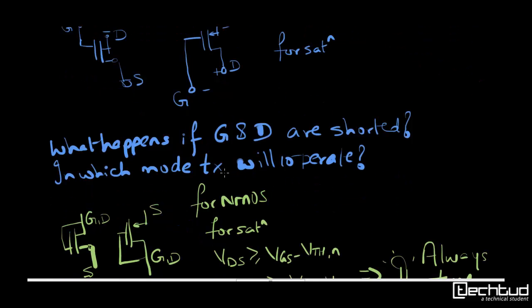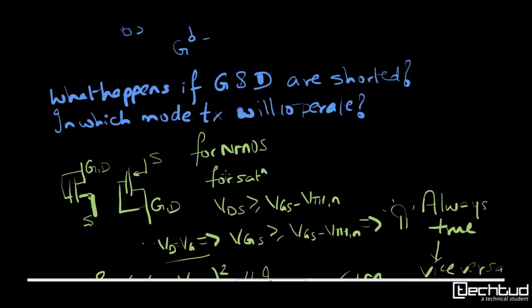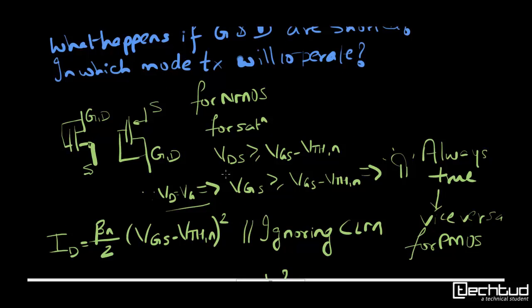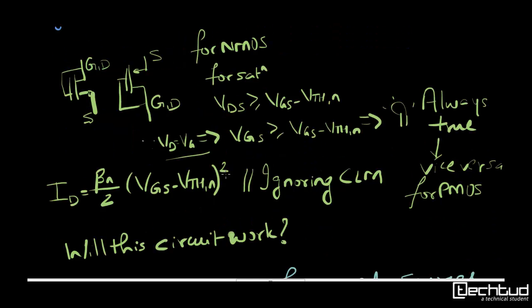Now what happens if gate and drain are shorted? In which mode will the transistor operate? In case of NMOS if you short gate and drain, from the saturation condition VDS greater than VGS minus VTHN, since drain potential is the same as gate potential, it implies VGS will be greater than VGS minus VTHN. This condition is always true.